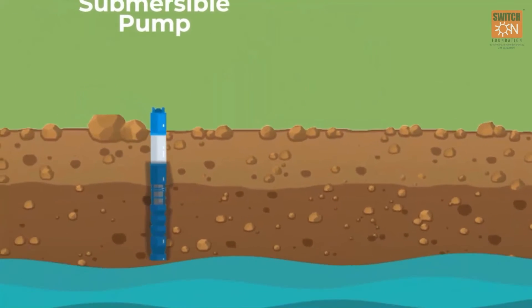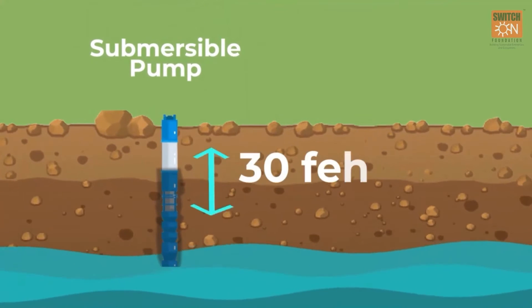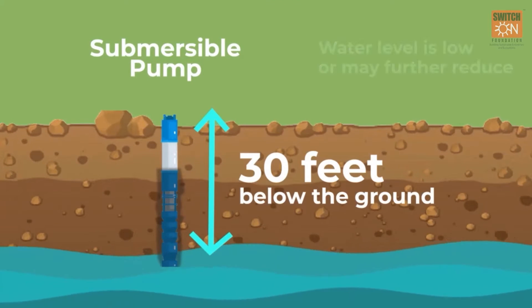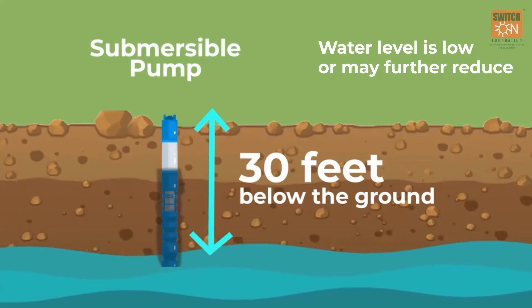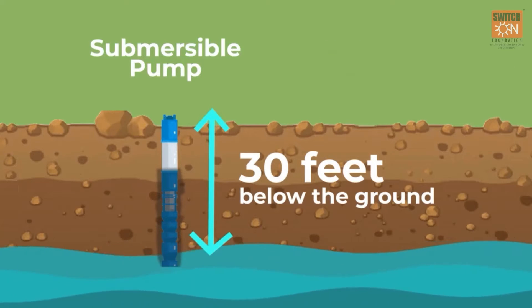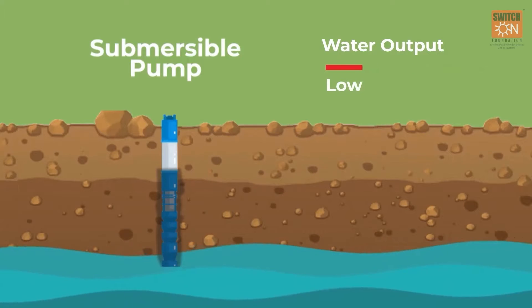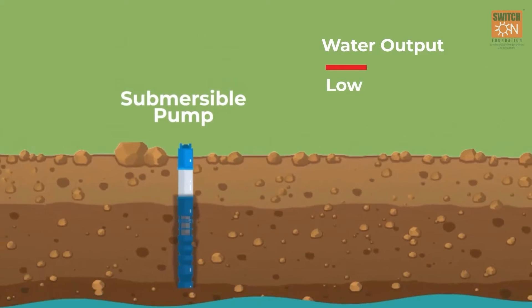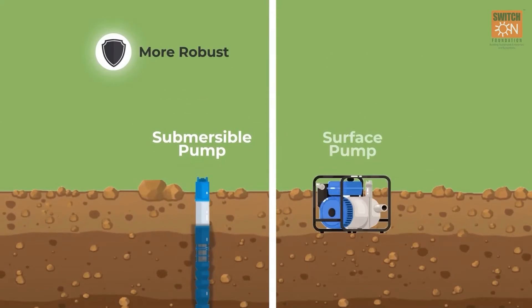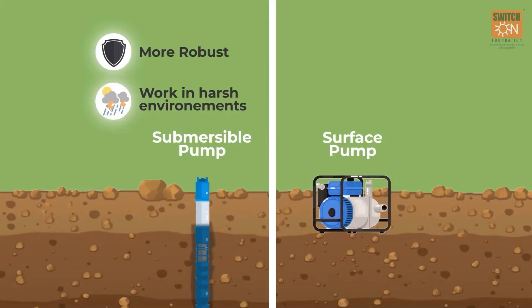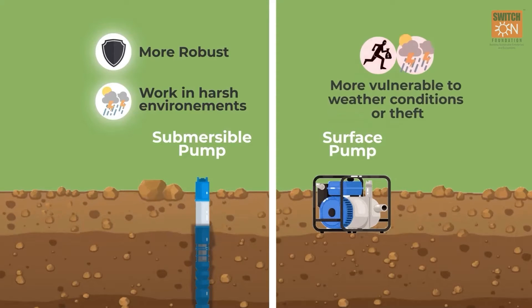Submersible pumps are located more than 30 feet below the ground where the water level is low or may further reduce in future. Submersible pumps have lower water output than surface pumps, but submersible pumps are more robust and work in harsh environments, while surface pumps are more vulnerable to weather conditions or theft.